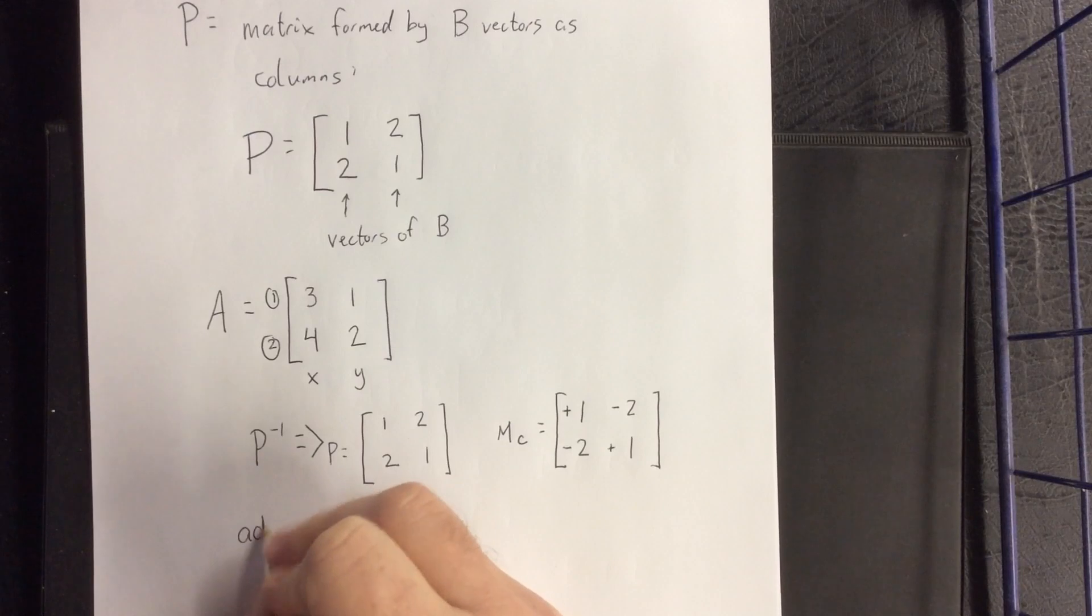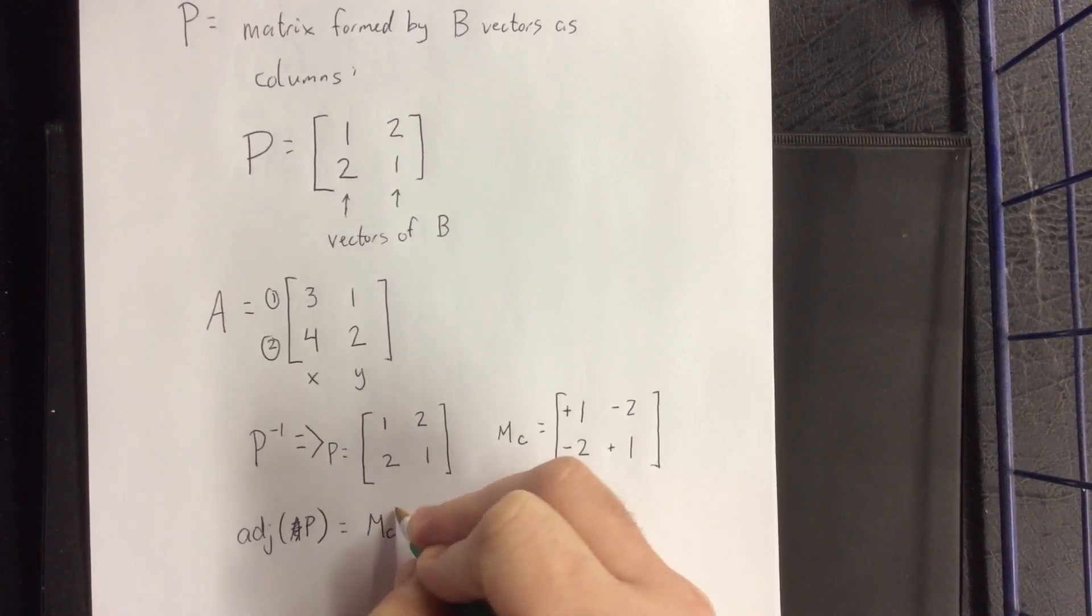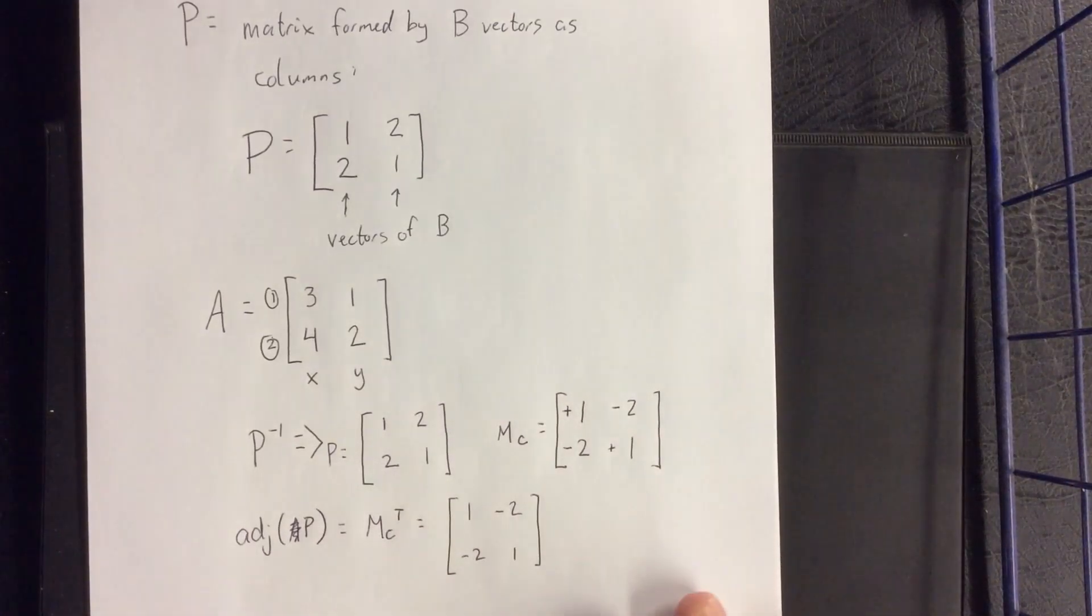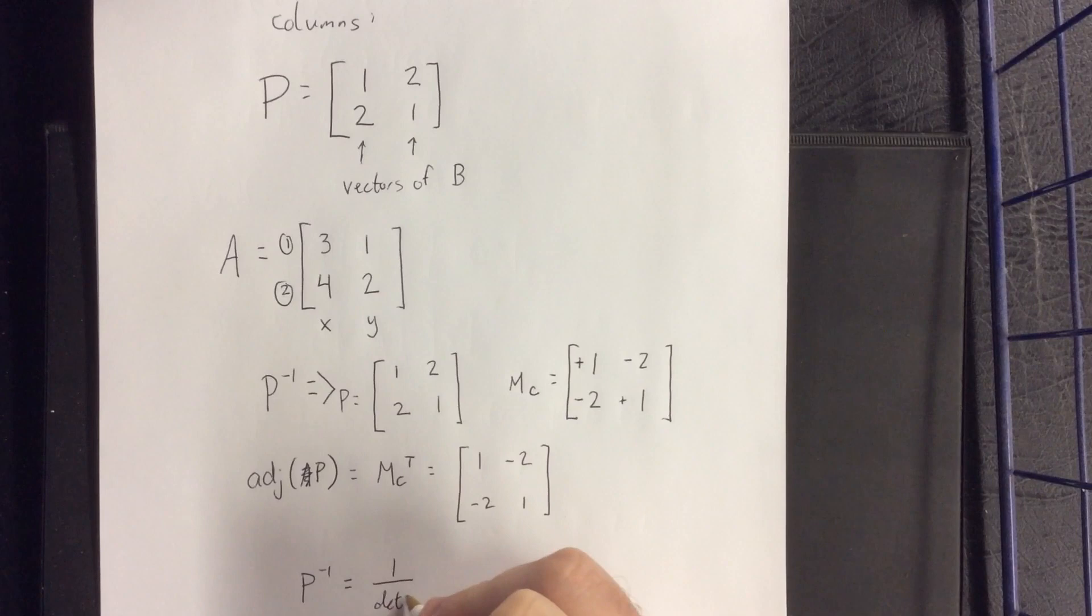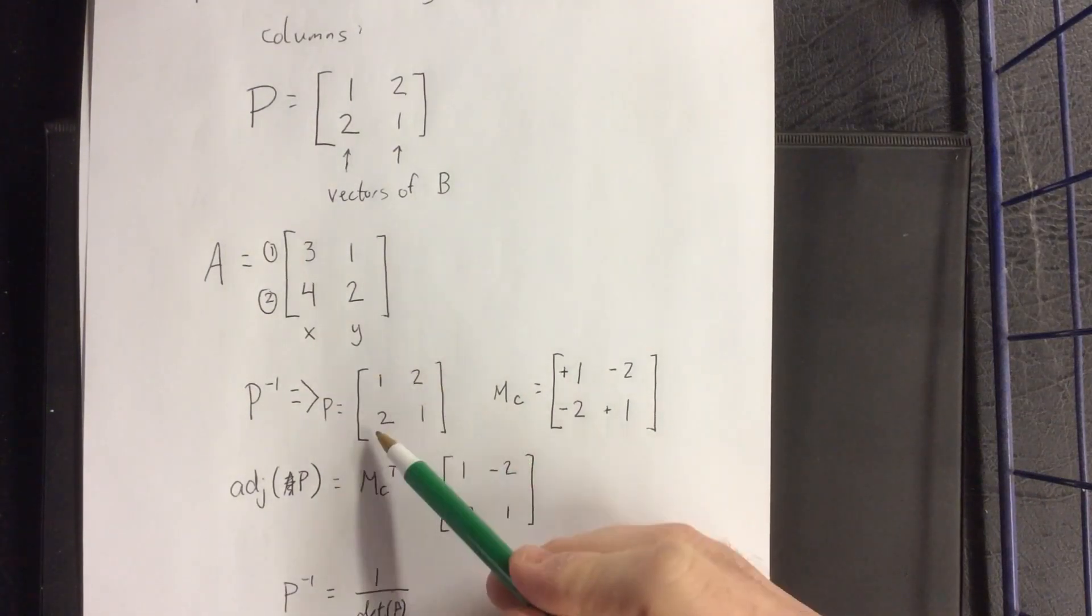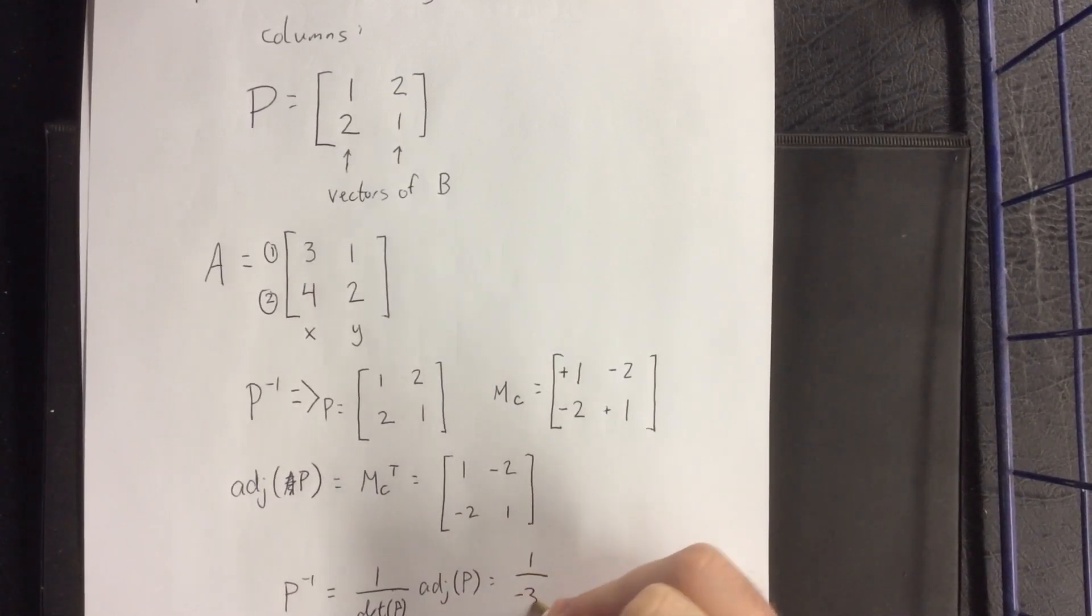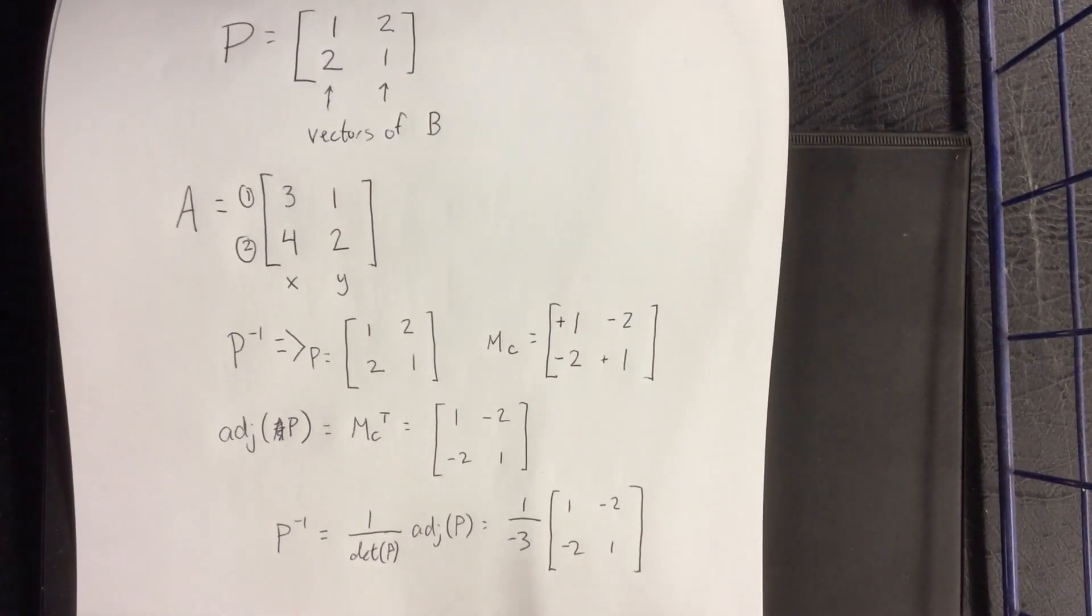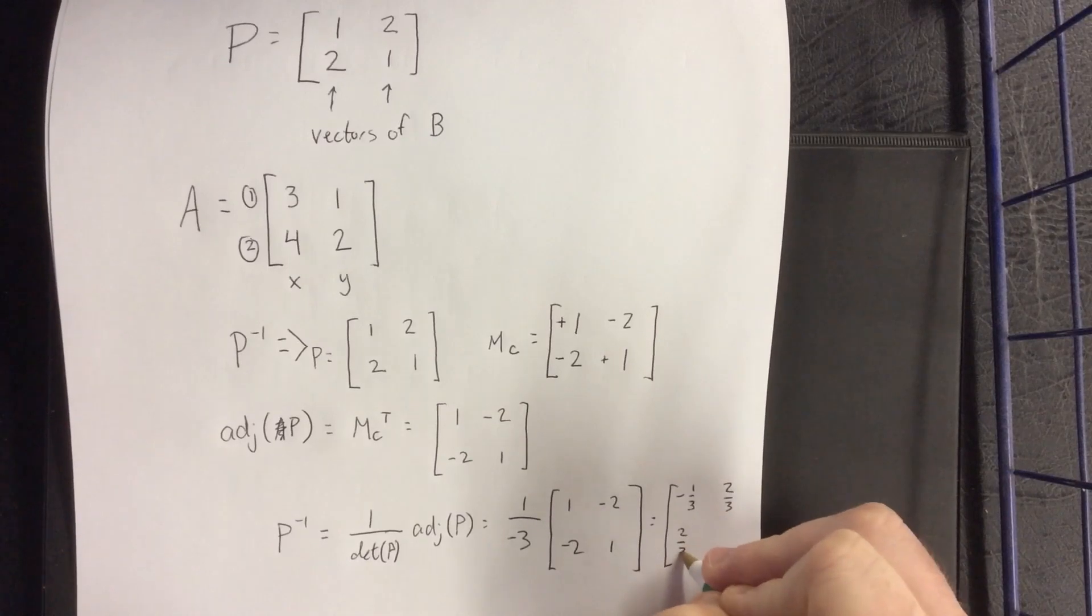Therefore the adjoint of P is going to be the transpose of the matrix of cofactors. Thankfully this is already a symmetric matrix so that is not necessary. And finally for P inverse, we'll need to divide this thing by the determinant of P. Determinant of P is relatively easy to figure out. It's going to be 1 minus 2 times 2, so that'll be negative 3. So this will be 1 over -3 times the matrix [1,-2; -2,1]. That'll be [-1/3, 2/3; 2/3, -1/3].